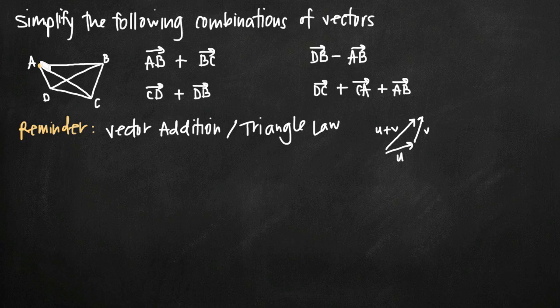So this corner of our figure here is point A, we have point D, C, and point B here. And these different lines connecting each of our points in the figure, we have been asked to add together these different vectors.